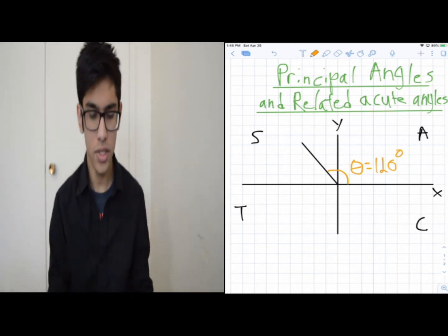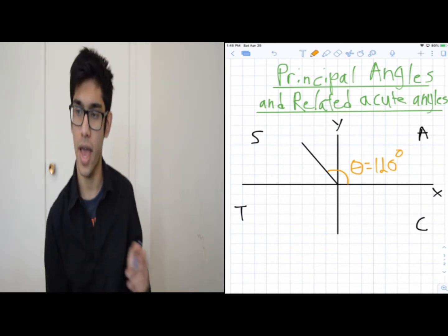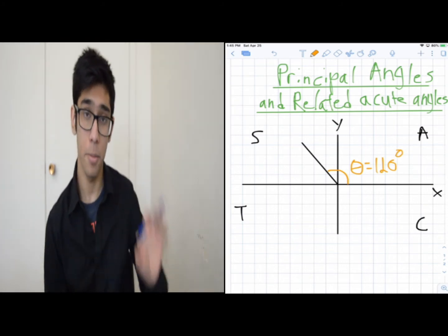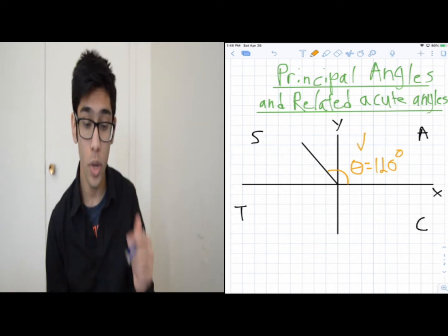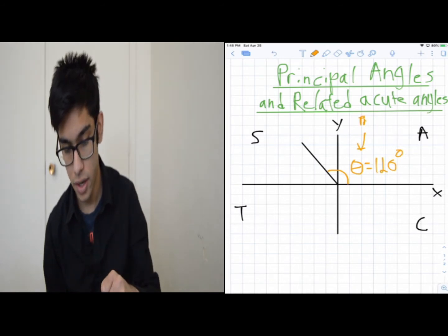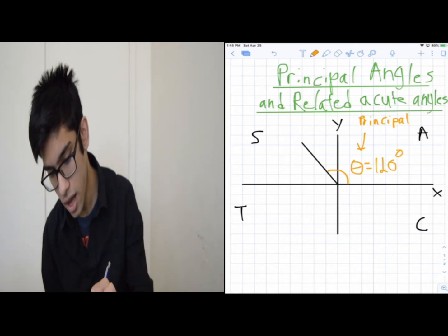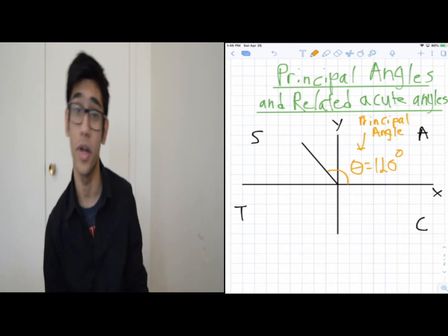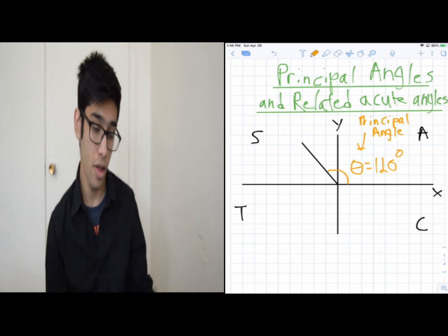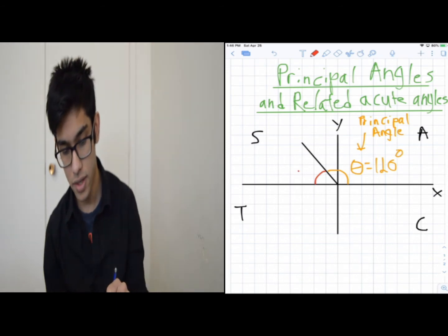We're used to dealing with angles less than 90 degrees. What do we do when we have an angle of 120 degrees? The name for this big angle — 120 degrees — is the principal angle. So you might ask: how do I solve for cosine of 120 degrees? I don't know what that is.